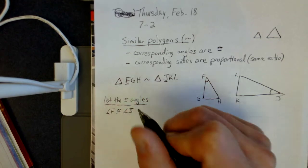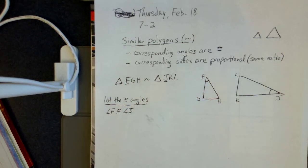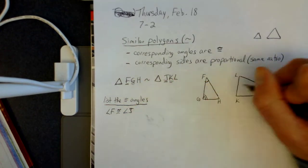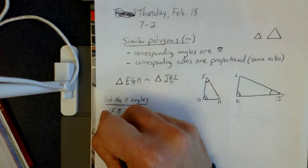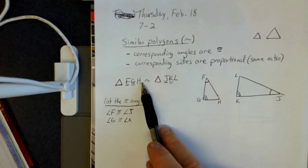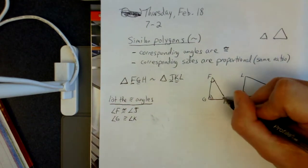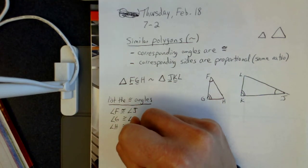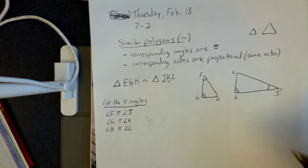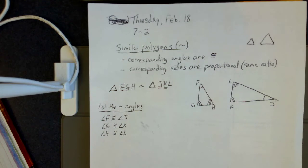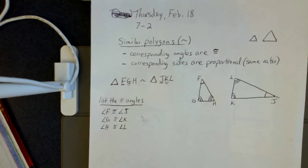So angle F is congruent to angle J — there's one set of congruent angles. Then G and K are the middle letters, so angle G is congruent to angle K. And your last letters are H and L, so angle H is congruent to angle L. There are our three sets of corresponding angles that are congruent to each other.